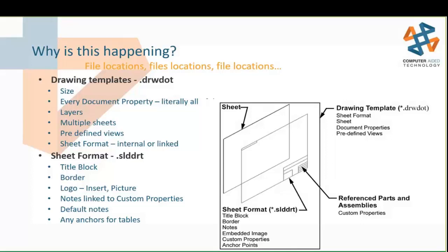If you need to customize ANSI or ISO standard, units, significant digits, or arrow sizes — literally everything under Tools > Options > Document Properties — they can be saved into templates. You can also utilize layers, set up multiple sheets, and if you'd like your drawings to always begin with a front, top, right view and an isometric view, you can set those up in predefined views. Finally, the drawing template has information about the sheet format.